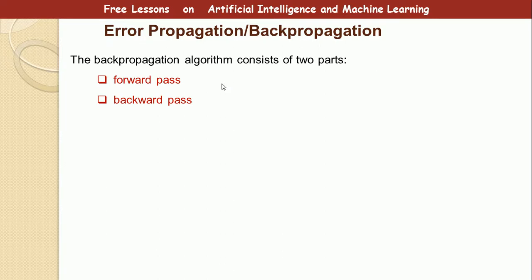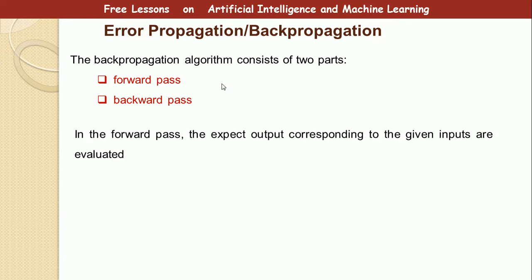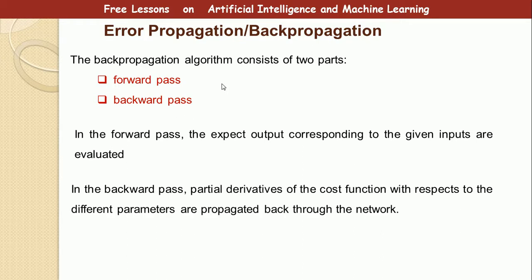Backpropagation is a method to train the neural network. Backpropagation algorithm has two parts, the forward pass and the backward pass. In the forward pass, the expected output corresponds to the given input I evaluated. And in backward pass, partial derivative of the cost function with respect to the different parameters are propagated back into the network. The process continues until the error is at the lowest value.